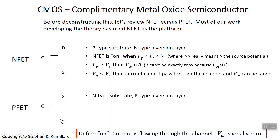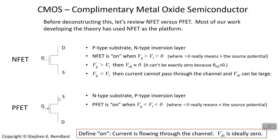Everything is the opposite for the PFET. The substrate is n-type, and when you apply the gate voltage you can get a p-type inversion layer. For the PFET, the threshold voltage is negative — that is, below the source voltage — so the gate voltage has to be lower than the source voltage by at least the threshold voltage. For example, if the source is at 10 volts and the threshold is 1 volt, the gate needs to be less than 9 volts to have an inversion layer.